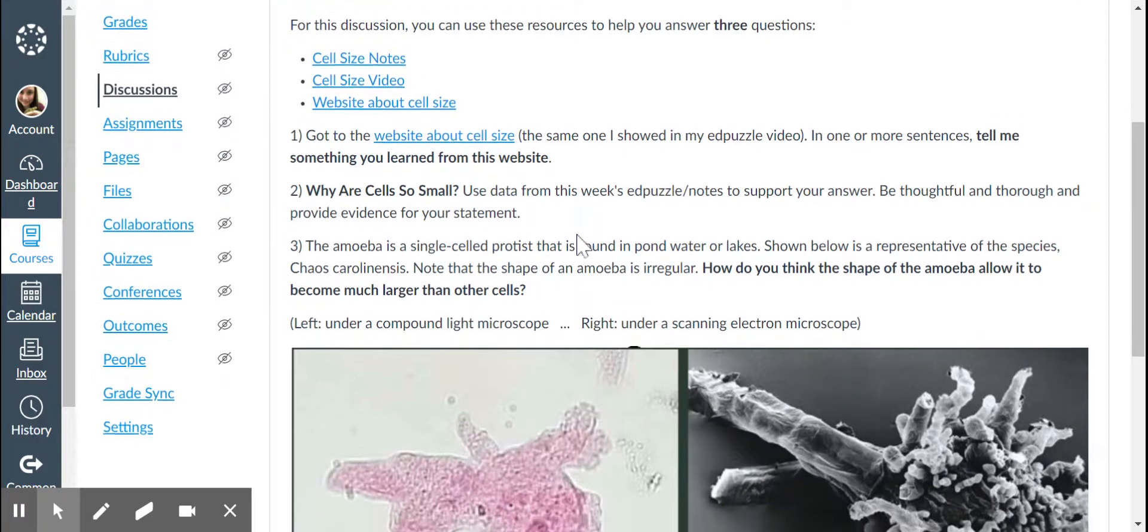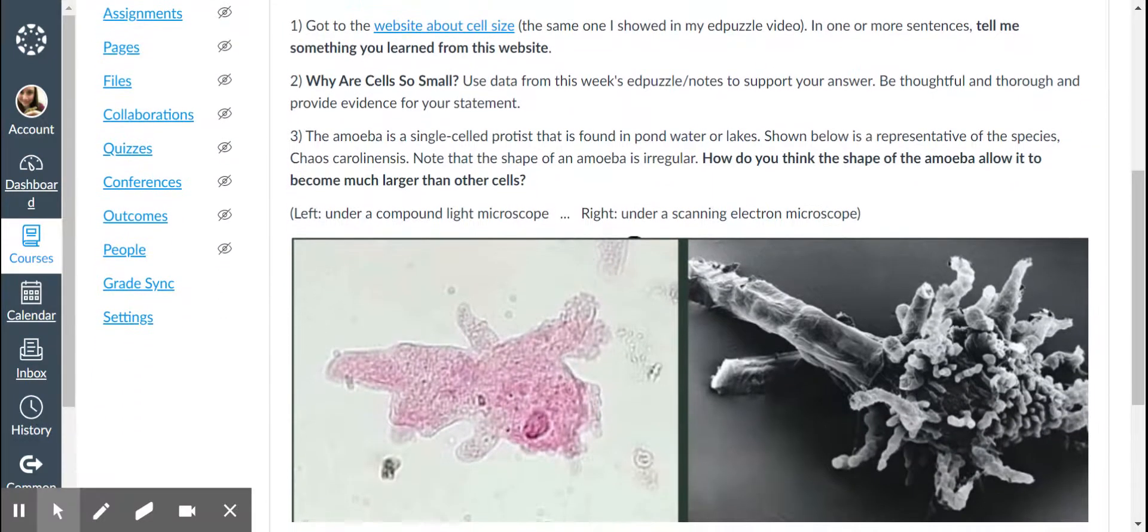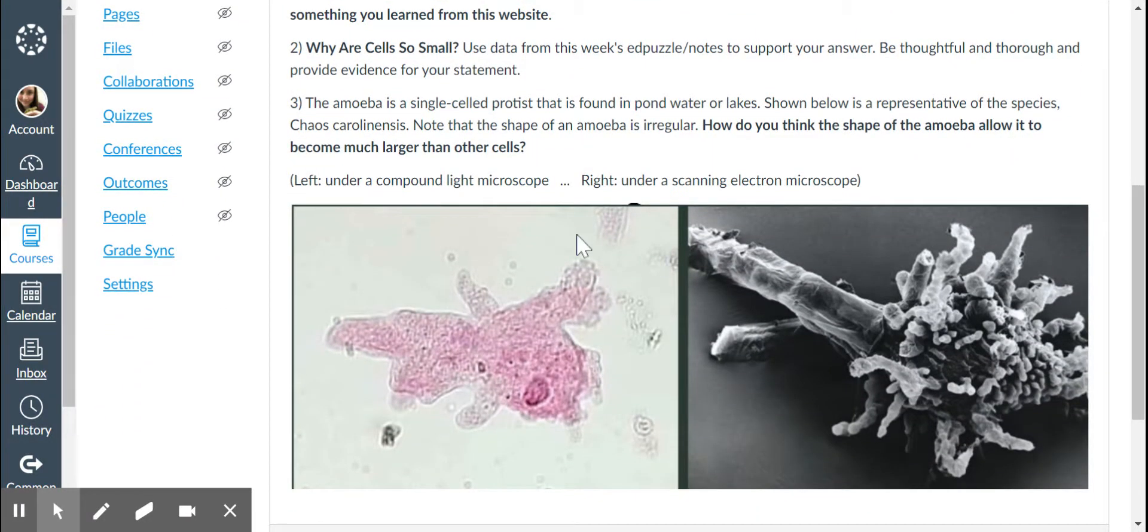Three, the amoeba is a single-celled protist that is found in ponds or lakes. Shown below is a representative of the species. This is a scientific name, Chaos carolinensis. Now, note that the shape of the amoeba is irregular. How do you think the shape of the amoeba will allow it to become much larger than other cells?